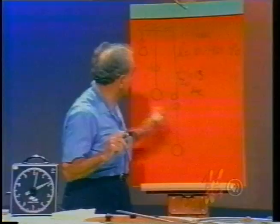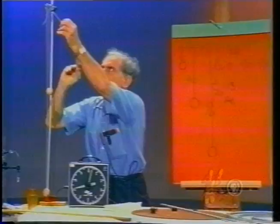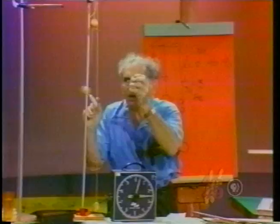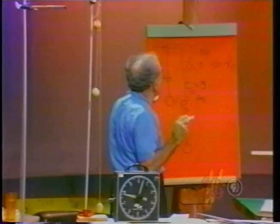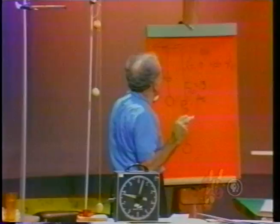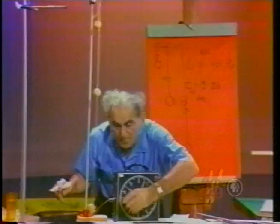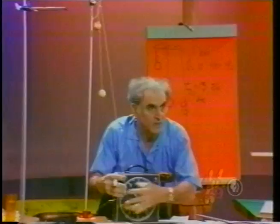I would count 20 oscillations of the 10-centimeter pendulum and get about 13 seconds. Where you are — say Colorado on a high mountain — you would get a different time, and in Australia a different time, because little g varies from place to place on the Earth. Then I do it with the 40-centimeter one, count 20 oscillations, and get about 26 seconds.